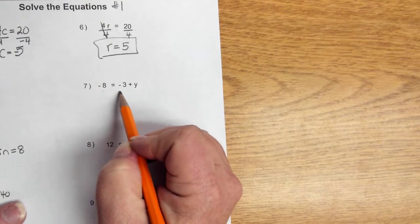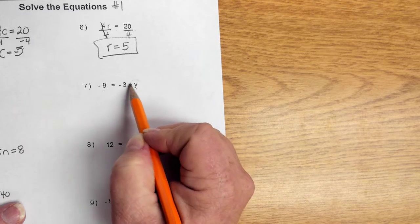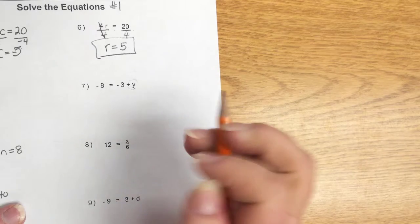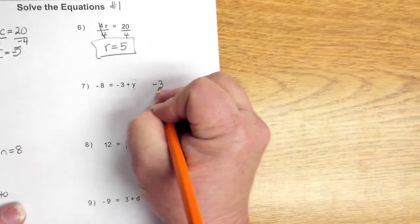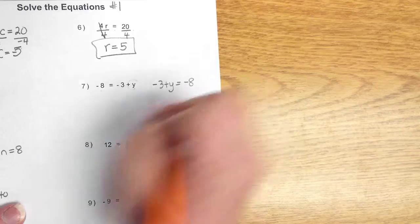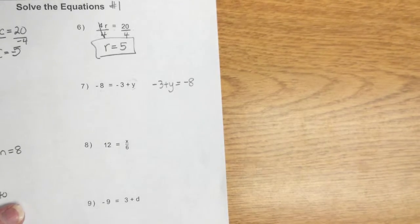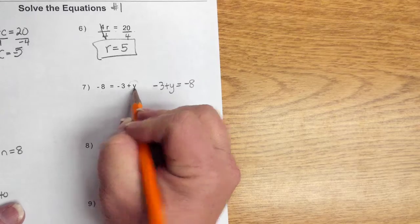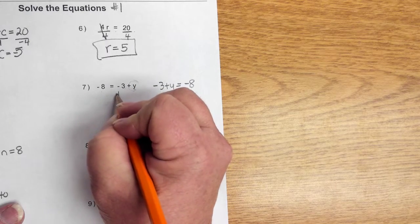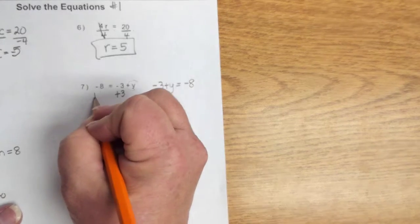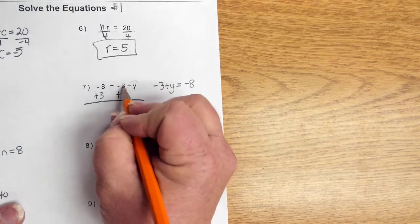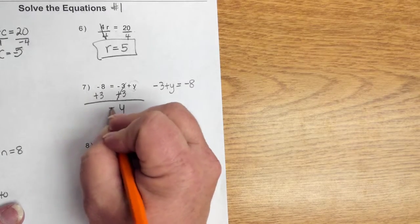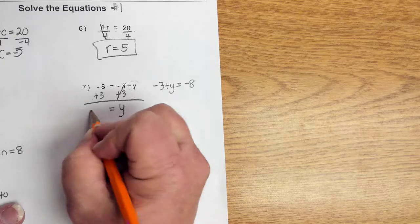Negative 8 is equal to negative 3 plus y. Remember, we want to leave our y by itself. Now, it's on that opposite side of the equation. It's on the right. If you need to come back and write that as negative 3 plus y is equal to negative 8, it means the exact thing. If you are only comfortable with your variables on the left side, then go ahead and rewrite it. Here, I need to get y by itself. So, a negative 3, the opposite, is a positive 3. If I add 3 to that side, I'm going to add 3 to that side. We're 0 pairing this. We want to end up with 0. So, that cancels out. We bring our y down.